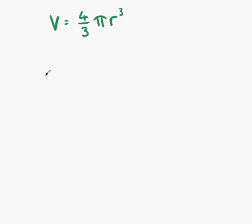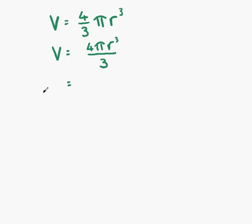Thinking about the previous example, we had something similar — a fraction multiplied by some terms. We're going to write this one down the same way as before. So 4 thirds pi R cubed is the same as 4 pi R cubed over 3. We want to make R the subject of the formula, so it's currently on the wrong side. The easiest thing is to flip this round: 4 pi R cubed over 3 is equal to V.